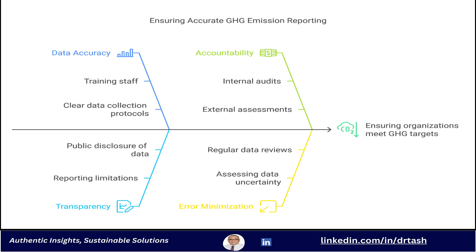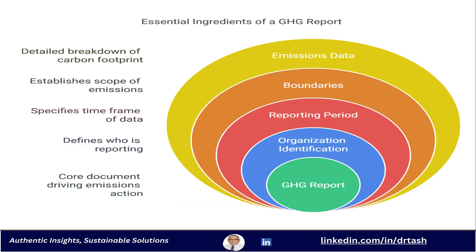All of this would be pointless if the data just sat in a file cabinet somewhere — which brings us to the final and arguably most important step: reporting. Section 9 of the standard is all about creating clear, credible, impactful GHG reports. Reporting is what connects all that data to actual action — turns it into something that can actually drive change. The standard lays it all out in a really structured way, making sure things are consistent and comparable between different organizations. It starts with the basics: identifying the organization, the reporting period, and those boundaries we talked about.